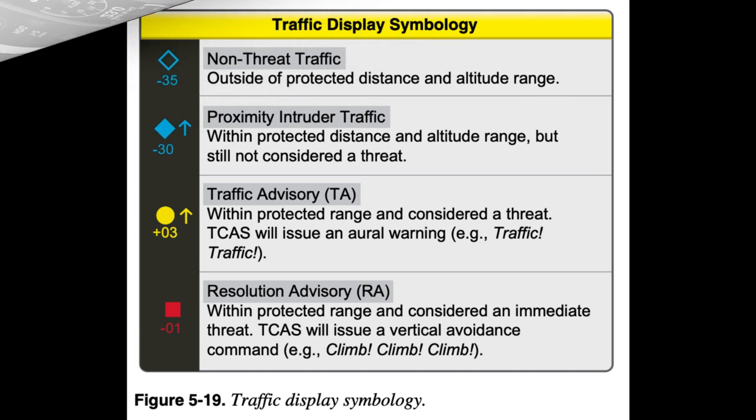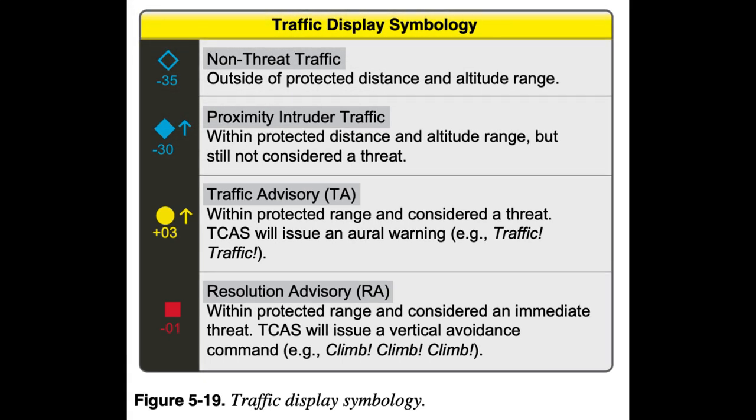Traffic Data Systems. A traffic data system is designed to help you visually acquire and remain aware of nearby aircraft that pose potential collision threats. All traffic data systems provide oral alerts when the aircraft comes within a certain distance of any other detected aircraft. Traffic data systems coupled with MFDs can provide visual representations of surrounding traffic. Most traffic data systems allow you to set the sensitivity of the system and display only traffic that exists within a specific distance from the aircraft. There are two basic types of traffic data systems available today — one using onboard sensors to detect nearby aircraft, the other relying on traffic information transmitted from ground facilities to the cockpit.